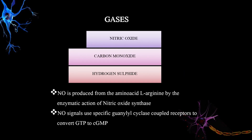The last category of secondary messengers are gases — for example, nitric oxide, carbon monoxide, and hydrogen sulfide. Nitric oxide is the most important and widely used gaseous secondary messenger. It is produced from the amino acid L-arginine by the enzymatic action of nitric oxide synthase. Nitric oxide signals use specific guanylyl cyclase-coupled receptors to convert GTP to cGMP, which further activates specific proteins.